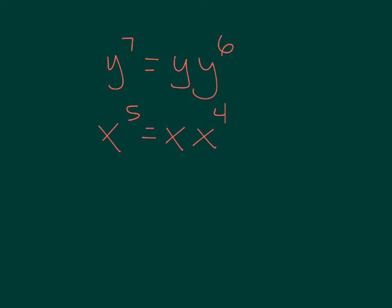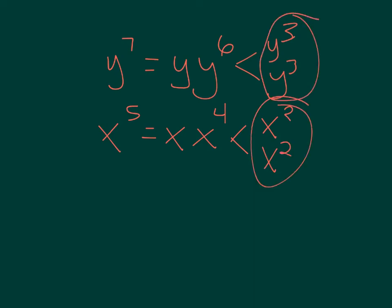I'm just taking one out, and then I could break up the Y to the 6th, the X to the 4th. That would be 3 and 3. This would be X squared, X squared. See the pairs? That's the pairs.